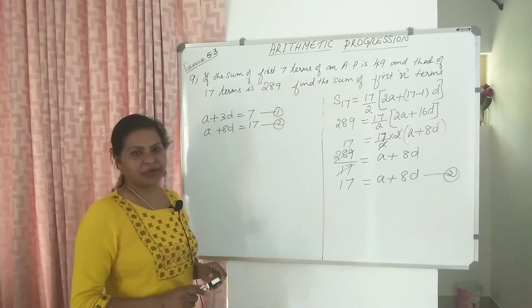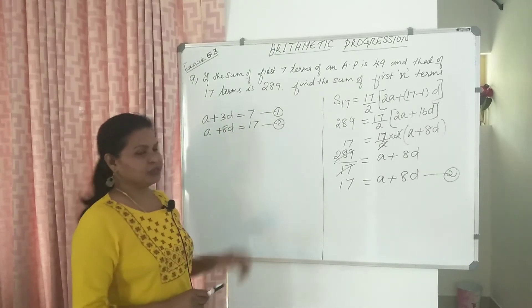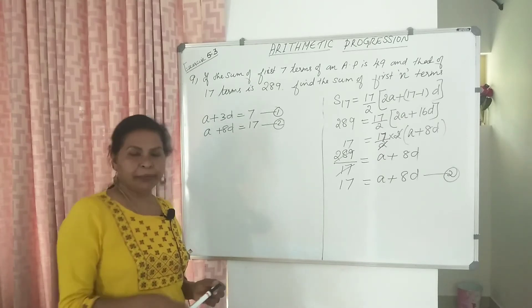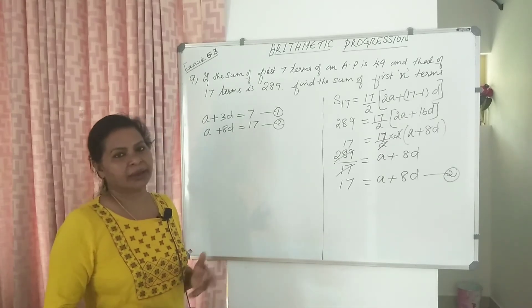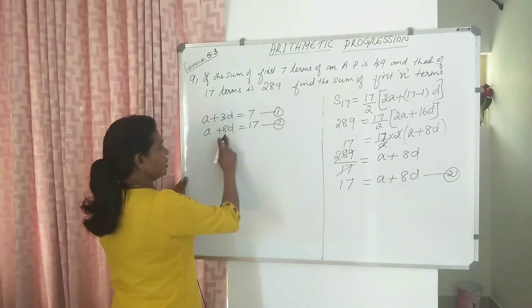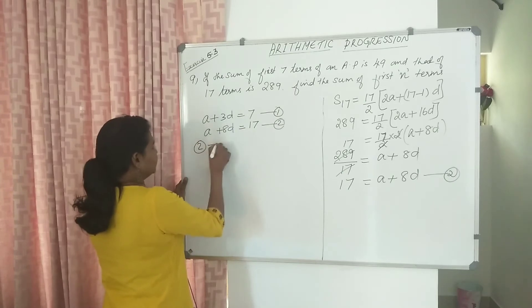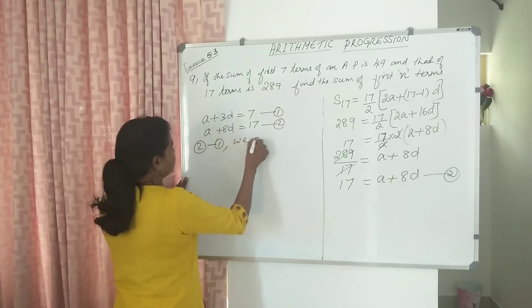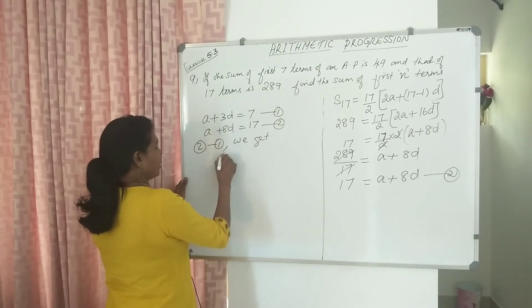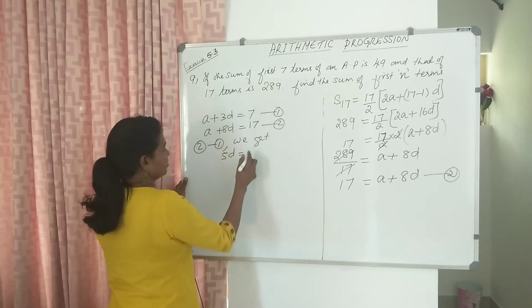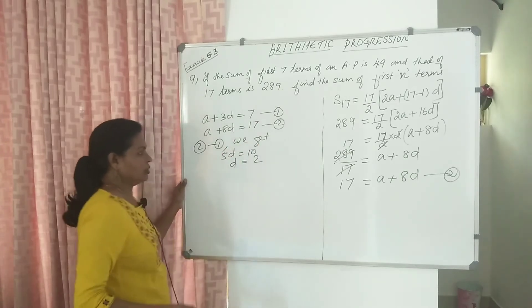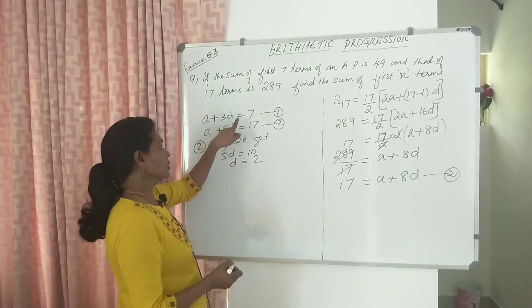So: A plus 3D equal to 7, and A plus 8D equal to 17. Solve the equations with two variables. Equation 2 minus equation 1: A cancels, 8 minus 3 gives 5D equal to 17 minus 7, which is 10. So D is equal to 10 divided by 5, which is 2.